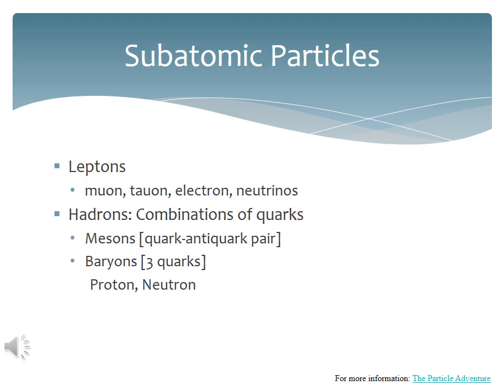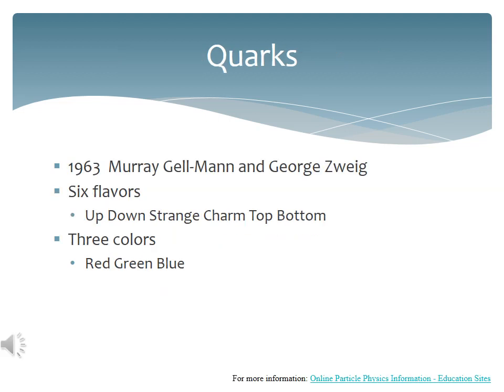Subatomic particles can be divided into two general categories: leptons, which are elementary particles, and hadrons, which are combinations of quarks. Hadrons can be divided into mesons, which are a quark-antiquark pair, and baryons, like protons and neutrons, which are a combination of three quarks. Quarks come in six types or flavors. Each flavor comes in three colors. Of course, the color of a quark doesn't have anything to do with real colors. We're just describing a property of quarks.